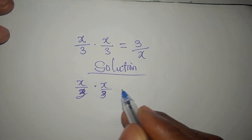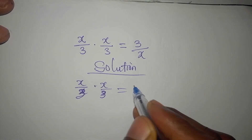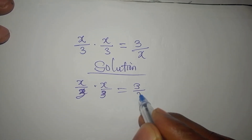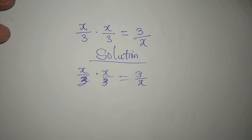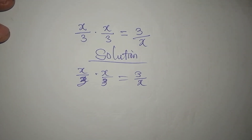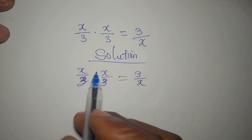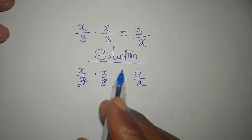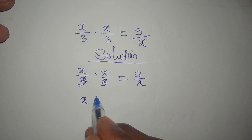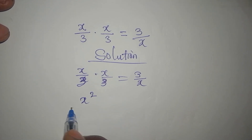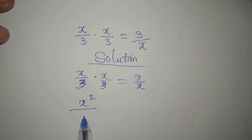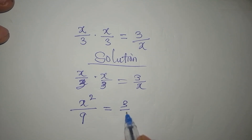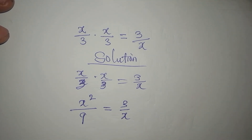This is supposed to be 3, is equal to 3 over x. Do not disturb yourself, just say x times x is x squared over 3 times 3, that would be 9, and is equal to 3 over x.